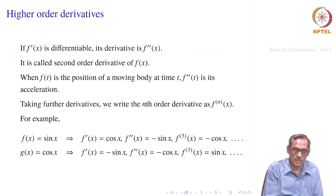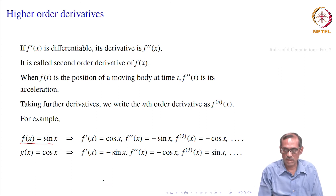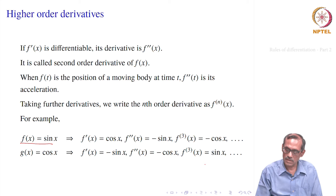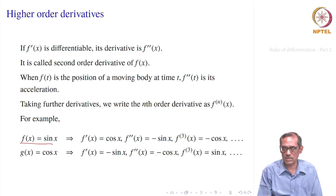If we take further derivatives, we may go to f⁽ⁿ⁾(x). As an example, let f(x) equal sin x. Then f′(x) equals cos x, f″(x) equals minus sin x, f‴(x) equals minus cos x, and f⁽⁴⁾(x) equals sin x again. After that the pattern repeats, because we have returned to sin x — so after every four derivatives the pattern repeats. Similarly for cos x: f′ is minus sin x, f″ is minus cos x, f‴ is sin x, and f⁽⁴⁾ is cos x again, and the pattern repeats.